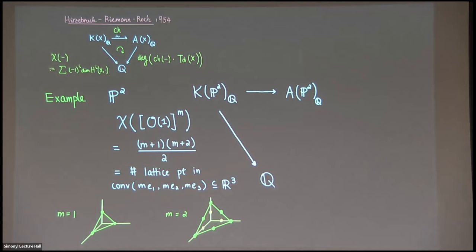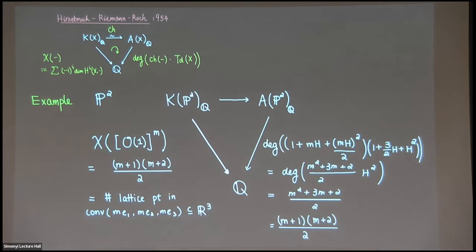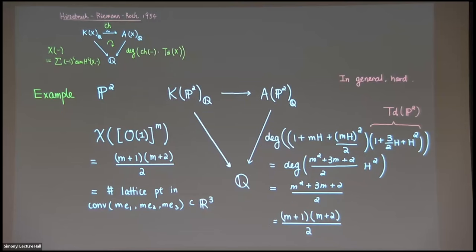This formula turns out to count the number of lattice points in the m-th dilation of the convex hull of the standard coordinate vectors in ℝ³ — this comes from classical toric geometry, viewing ℙ² as a toric variety. When m equals one, you count lattice points in this convex hull and get three. When m equals two, you get a triangle with six boundary points and no interior points, matching the formula exactly. On the Chow ring side, I compute the Chern character of the vector bundle, intersect with the Todd class, and get the same answer. In practice, this Todd class can be very hard to compute, especially as dimension increases.